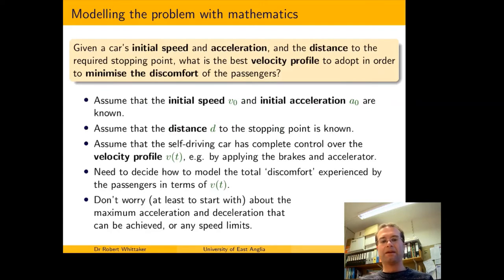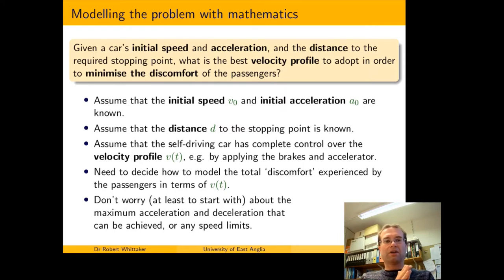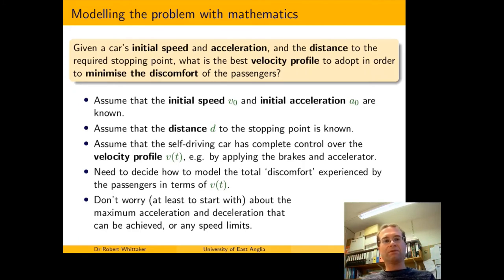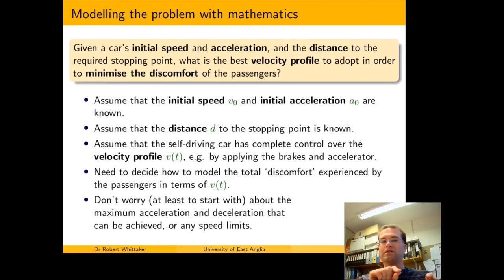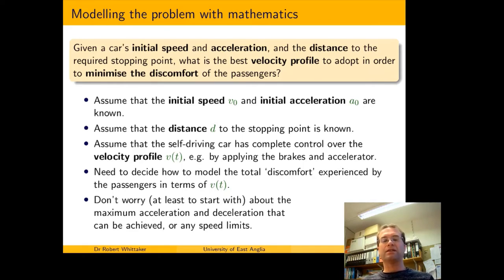Back to the problem: given a car's initial speed and acceleration and the distance to the required stopping point, what is the best velocity profile to adopt in order to minimise discomfort? We're thinking about a car approaching a red traffic light — how should it slow down and stop? We don't want to carry on at current speed until nearly at the lights then jam on the brakes. Equally we don't want to slow almost to a halt and inch forwards. We want to get there in a reasonable time and slow down smoothly so passengers don't get thrown around.